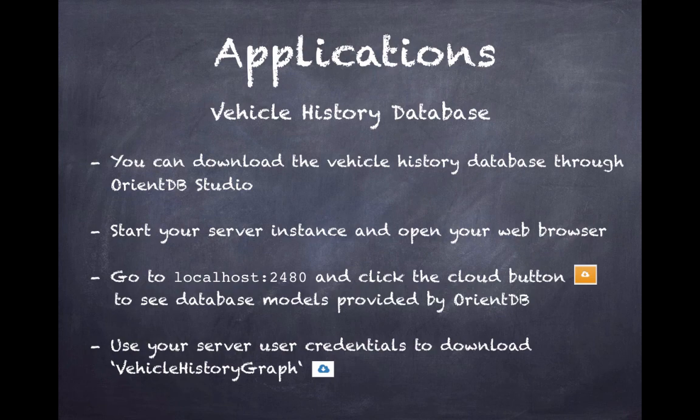Start your server instance and open up your web browser. Go to localhost 2480 and click the cloud button to see database models provided by OrientDB. Use your server user credentials to download Vehicle History Graph now.